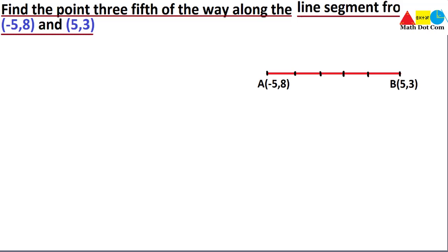We have divided the given line segment into 5 parts — labeled 1, 2, 3, 4, and 5. These are the 5 parts of the line segment with the given endpoints, and we have to find the point that is 3/5 of the way along the line segment.